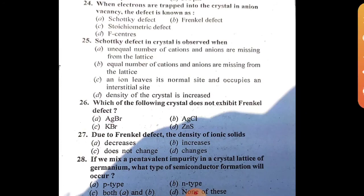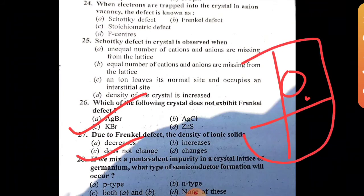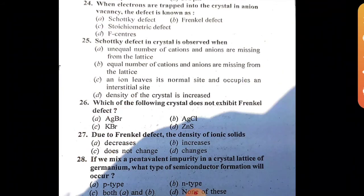Due to Frenkel defect, the density of ionic solids does not change, because when a cation or anion misses from its lattice site, it goes to an interstitial site within the crystal. So density does not change. However, in Schottky defect, density decreases.